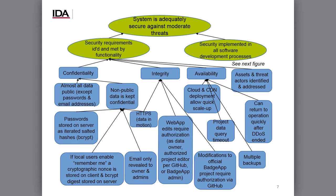This is the top-level figure in the assurance case, and at the very top you'll notice a key claim: the system is adequately secure against moderate threats. We're not trying to resist direct attack against a nation state — we're looking at much more moderate kinds of threats. There are two subclaims that help justify this top-level claim: one is that the security requirements have been identified and met by their functionality, and the other is that security is implemented in all the software development processes.